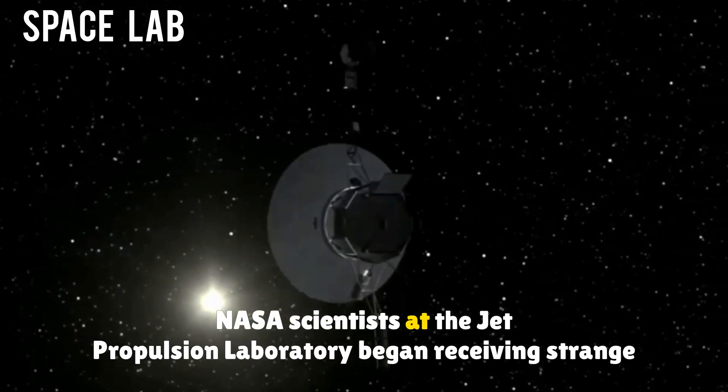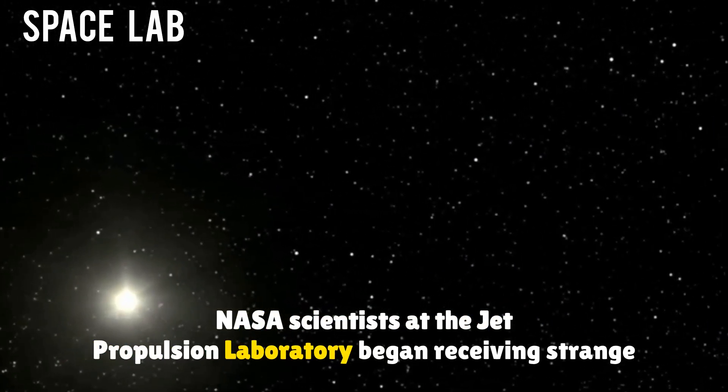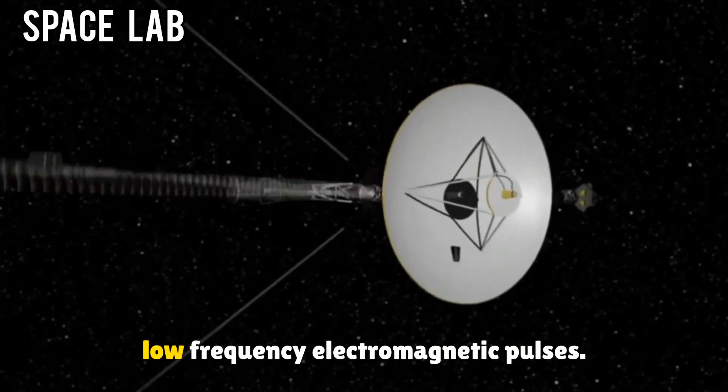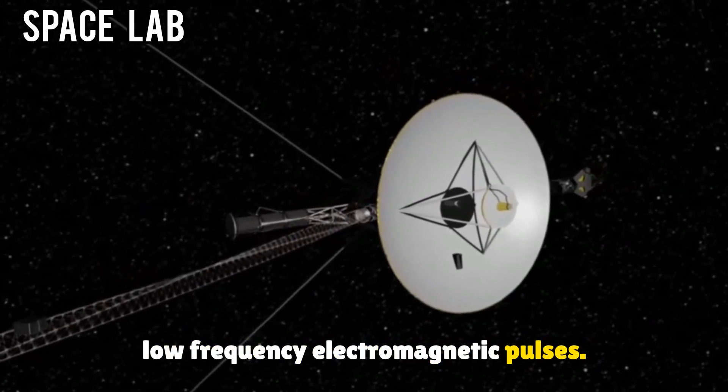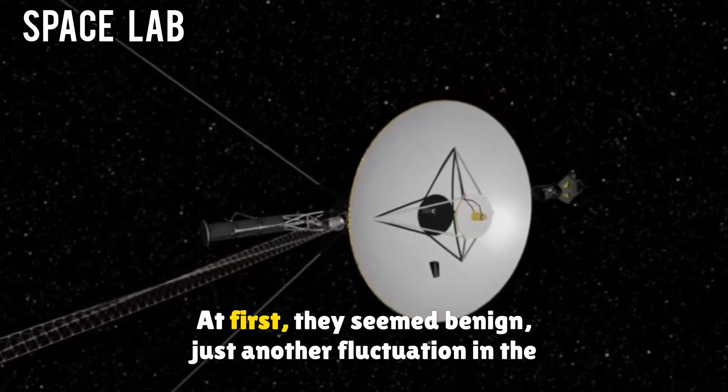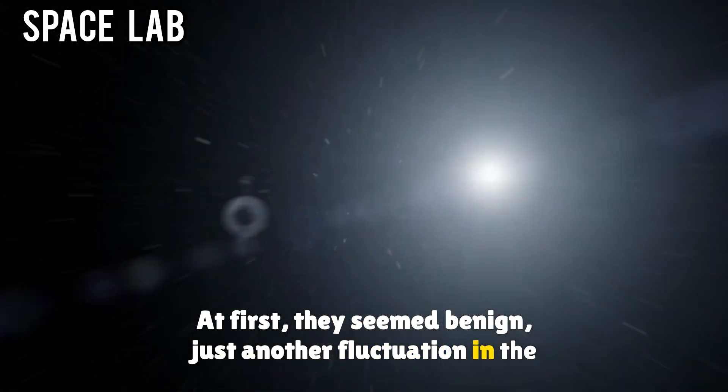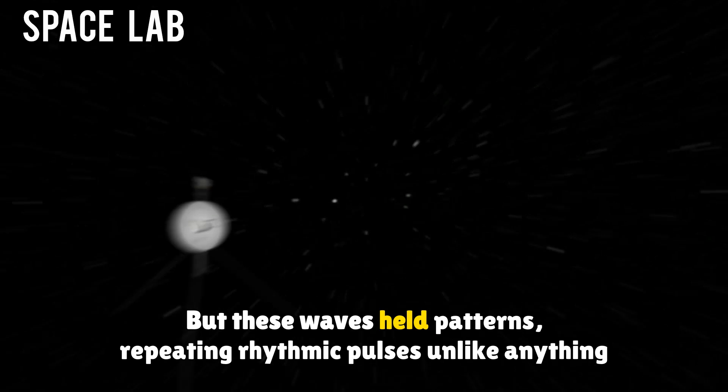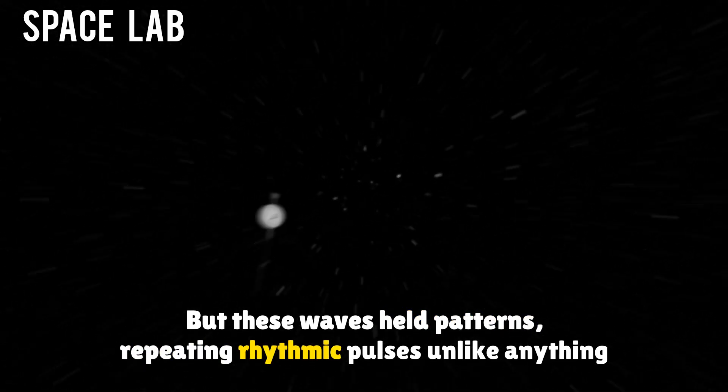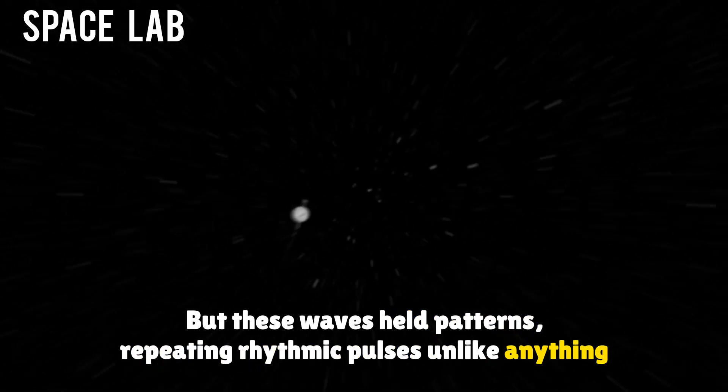NASA scientists at the Jet Propulsion Laboratory began receiving strange, low-frequency electromagnetic pulses. At first, they seemed benign, just another fluctuation in the interstellar wind. But these waves held patterns, repeating rhythmic pulses unlike anything seen before. They weren't random.